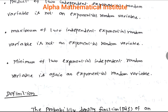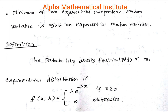The third result says that the maximum of two independent exponential random variables is not an exponential random variable. Using this fact, we can discard the third option. The fourth result says that the minimum of two exponential random variables is again an exponential random variable. Using this fact, we can choose the fourth option as the correct option. But we need to prove this result rigorously, and for that we need some definitions for exponential distribution.